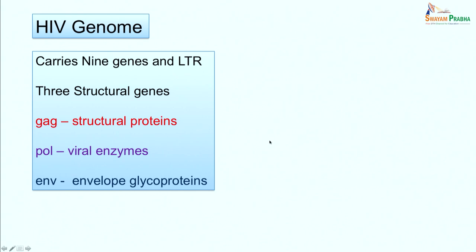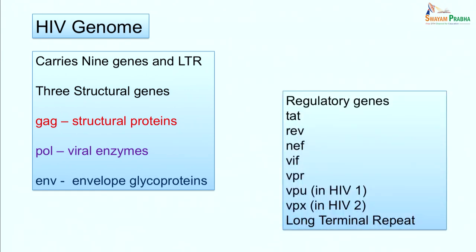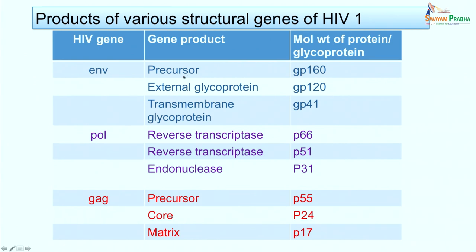HIV has a genome consisting of two positive strands of identical RNA. There are nine genes in total: three structural genes and six non-structural regulatory genes. The three structural genes are GAG (coding for structural proteins), POL (coding for viral enzymes), and ENV (coding for envelope proteins). The six regulatory genes code for proteins involved in replication, infectivity, and pathogenicity. The gene products are important for diagnosis: the ENV gene codes for GP160, GP120, and GP41 — GP160 is the precursor which is cleaved by protease into GP120 and GP41.